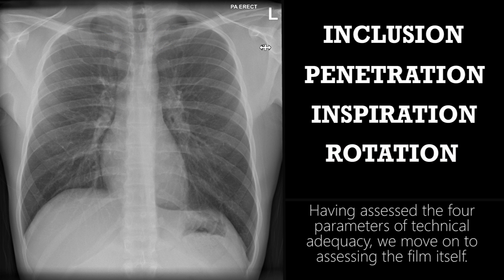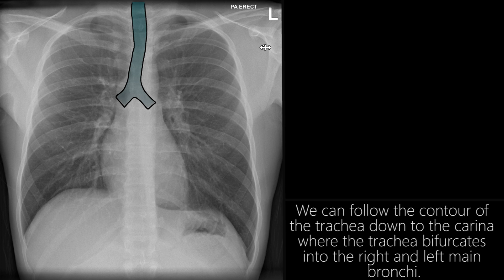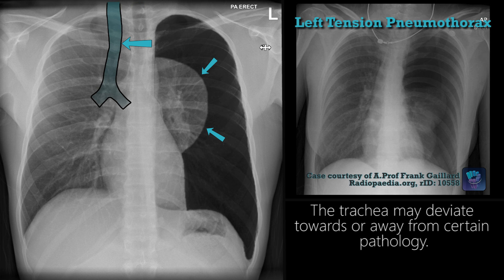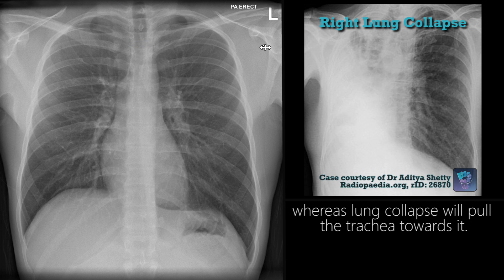Having assessed the four parameters of technical adequacy, we move on to assessing the film itself. We start with the trachea, which should be seen in the midline of a non-rotated film. We can follow the contour of the trachea down to the carina, where the trachea bifurcates into the right and left main bronchi. The trachea may deviate towards or away from certain pathology. A tension pneumothorax or large pleural effusion will push the trachea away from the affected side, whereas lung collapse will pull the trachea towards it.